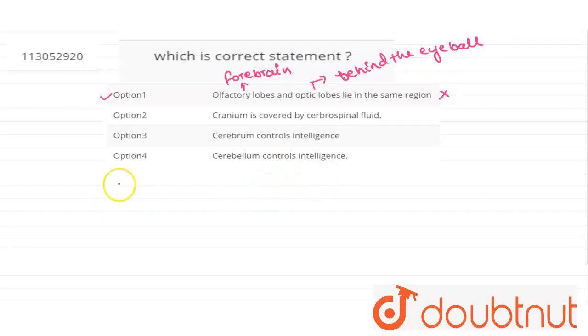If we talk about option number 2, then we would come to know that cranium is not covered by cerebrospinal fluid. Both cranium and cerebrospinal fluids are quite different terms.